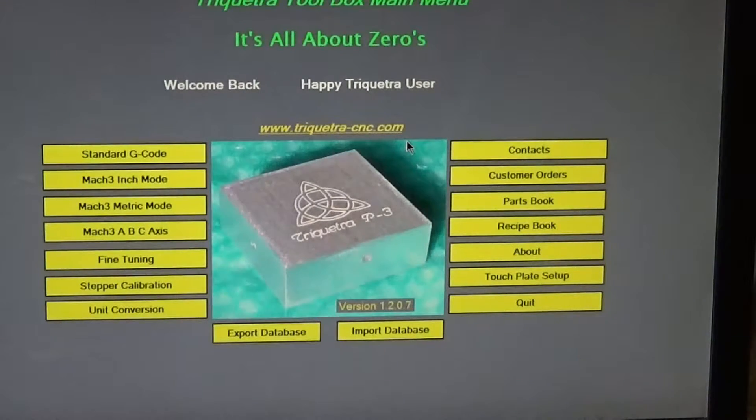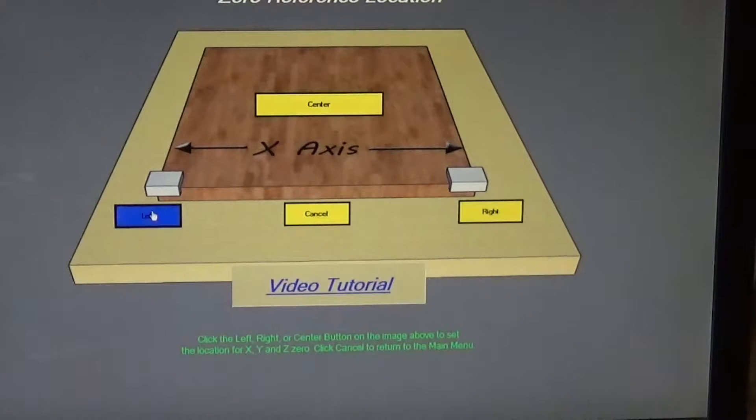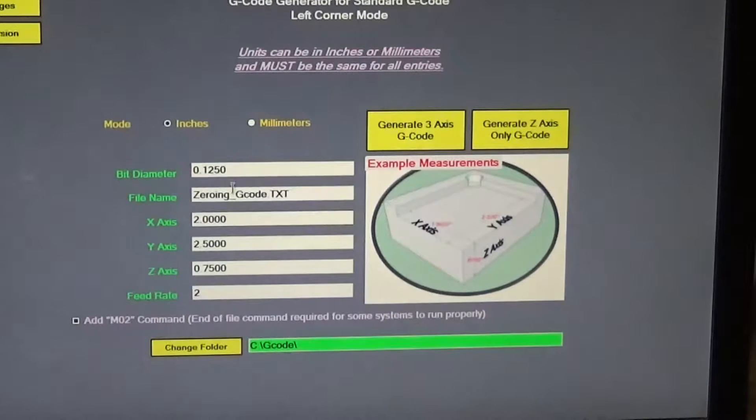First thing we need to do is create a zeroing code, and we're going to do that by going to standard g-code up here. We're going to do a left corner and we're going to use a quarter inch bit, so I'm going to change that to 0.25. We've got to give it a file name, so I'm going to call it 0.25 test text.